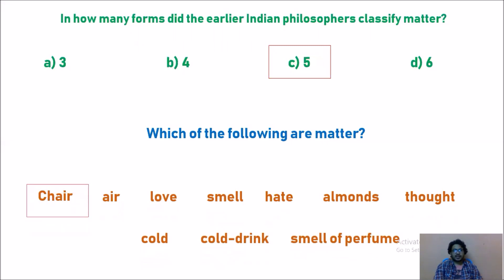First one, chair: chair is a matter because chair has mass and occupies space. Air: air is nothing but mixture of gases, gases made up of particles and it will have mass, so air is matter. Love is not a matter, it is an emotion and there is no mass for love, there is no space for love. Smell: no, it is sensation. Hate is also type of emotion. Almonds have mass and occupy space.